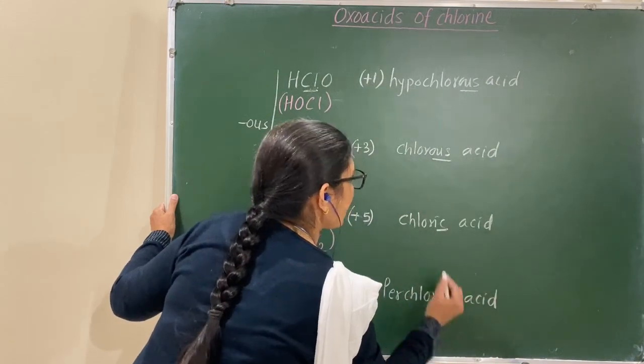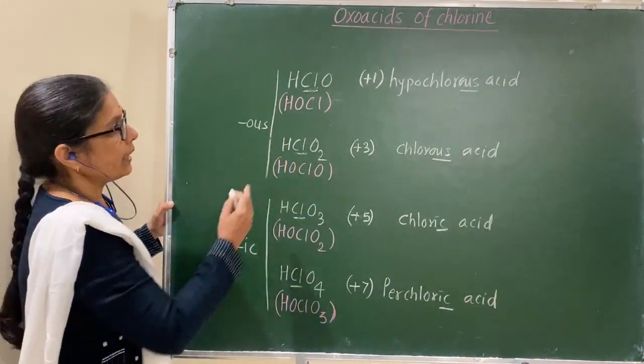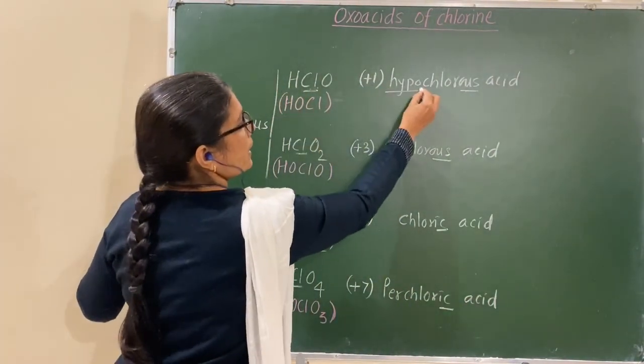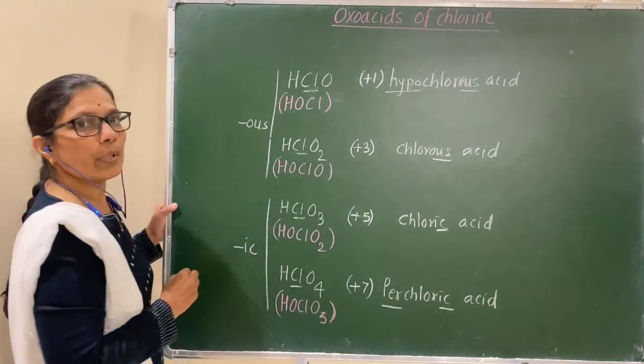Here, for the lowest one, it's hypo. The highest one is 'ic'.